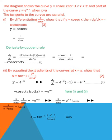So 1 over sin a equals e to the power minus a times tan a, and rearranging: 1 over (e to the power minus a times sin a) equals tan a. Therefore a equals tan inverse of (e to the power a over sin a), which is the required form.